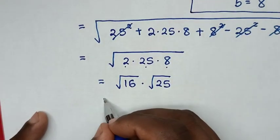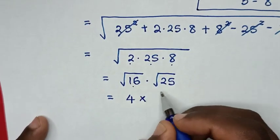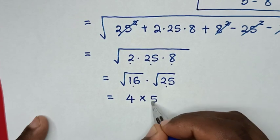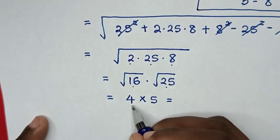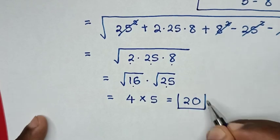Then, it will be equal to square root of 25 is 5, so it will be equal to 4 times 5 is 20. So this is our final answer.